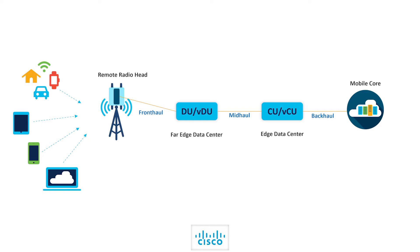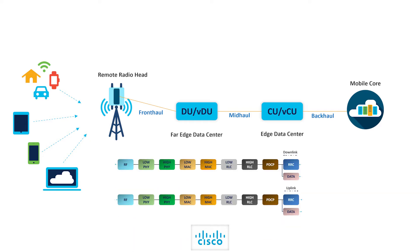All of this led to a flexible implementation of radio functions called functional splits, which determined the amount of functions left locally at the antenna side and the amount of functions centralized at a higher processing power data center. For 5G NR implementations, the radio processing and baseband functions from the 3GPP protocol stack are split into a distributed unit (DU) and a centralized unit (CU). There is also a possibility of virtualizing many of these functions with software and implementing them on commercial off-the-shelf hardware.